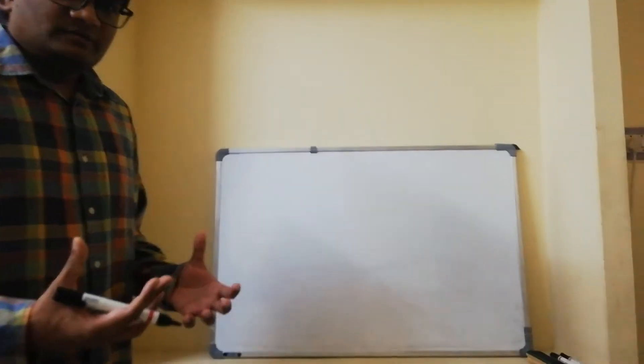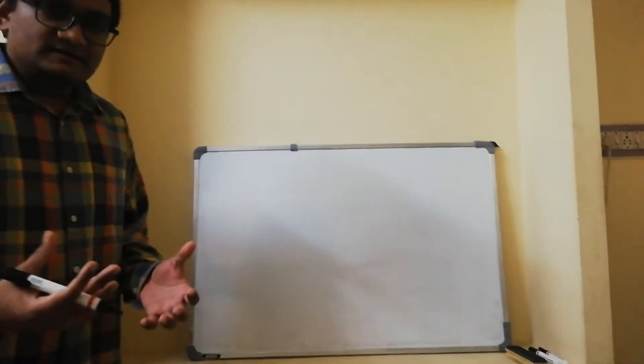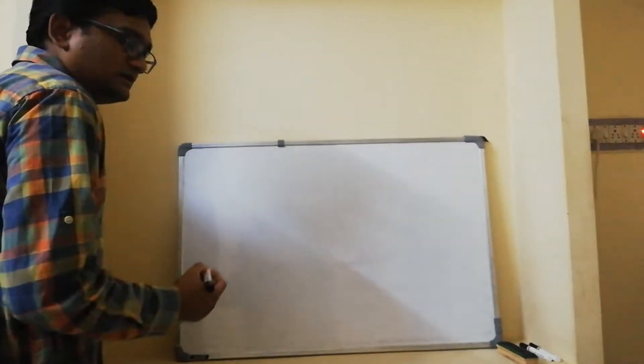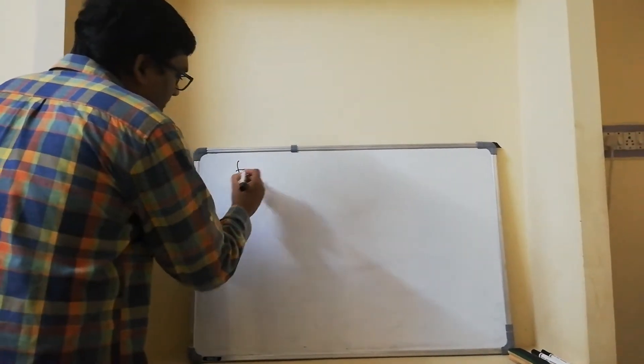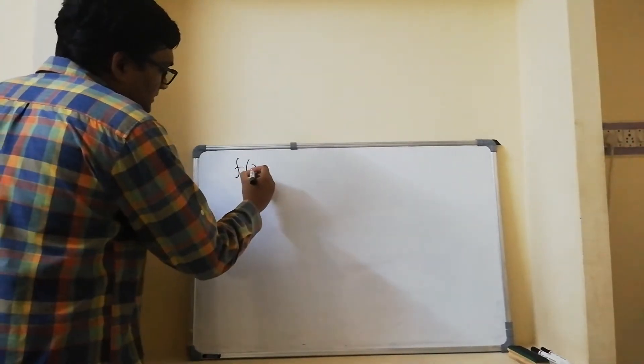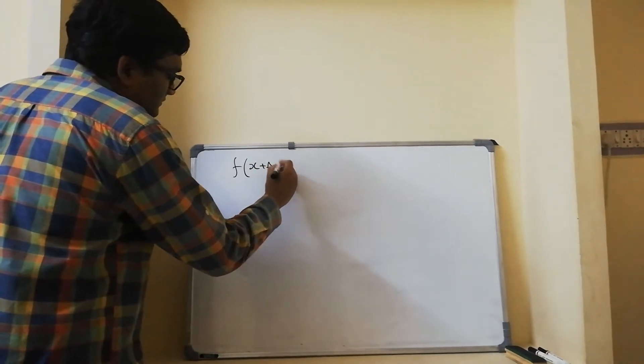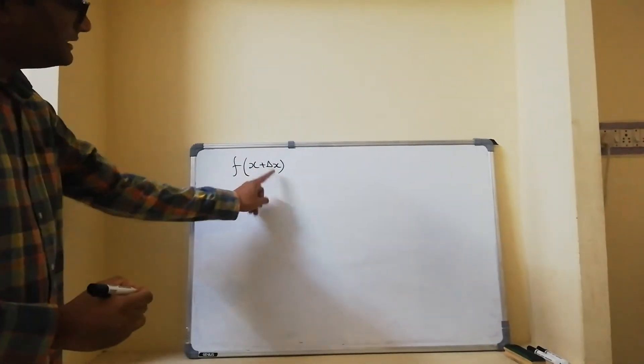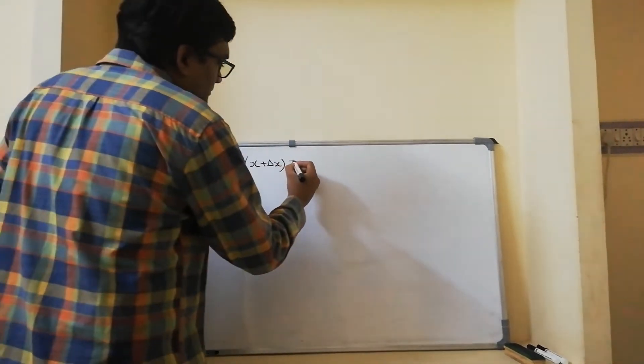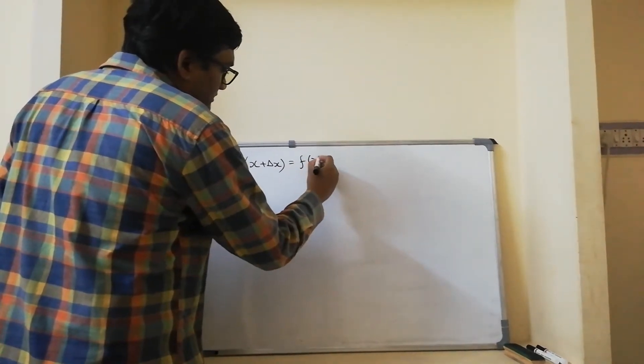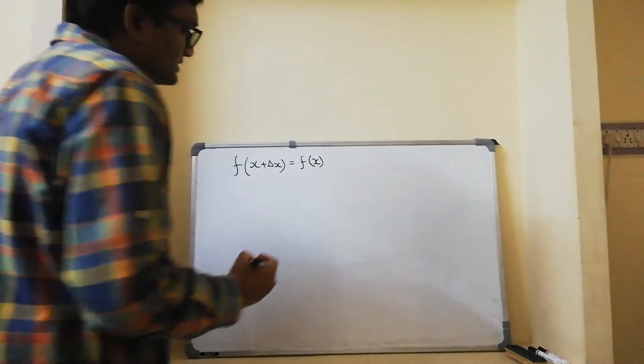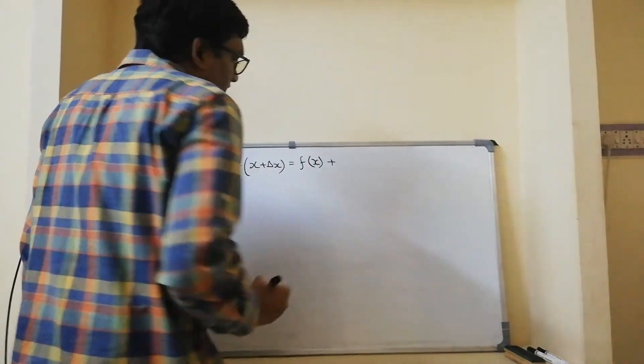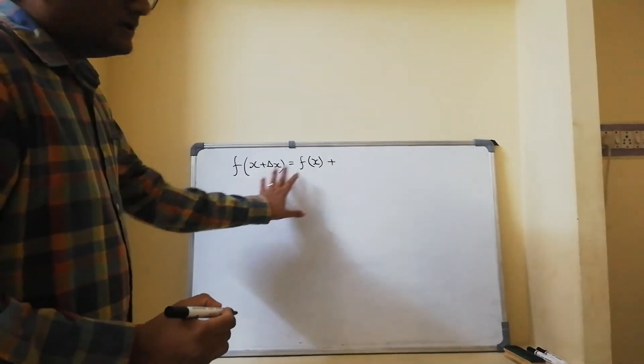We have understood what discretization means and we have looked at the Taylor series. Let me rewrite it again. If I have a function and I want to find out the value of the function at delta x location, provided I know the value of the function at location x, I can expand this into an infinite series.